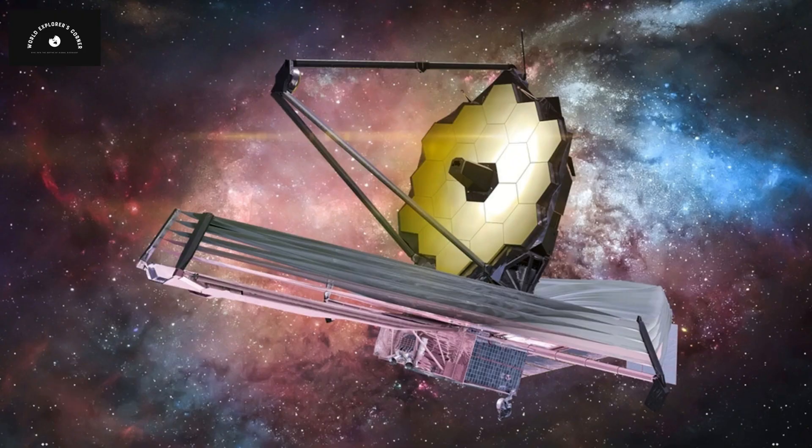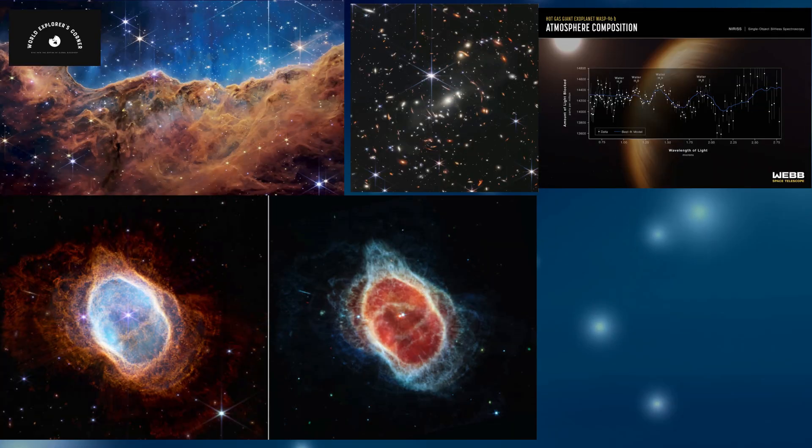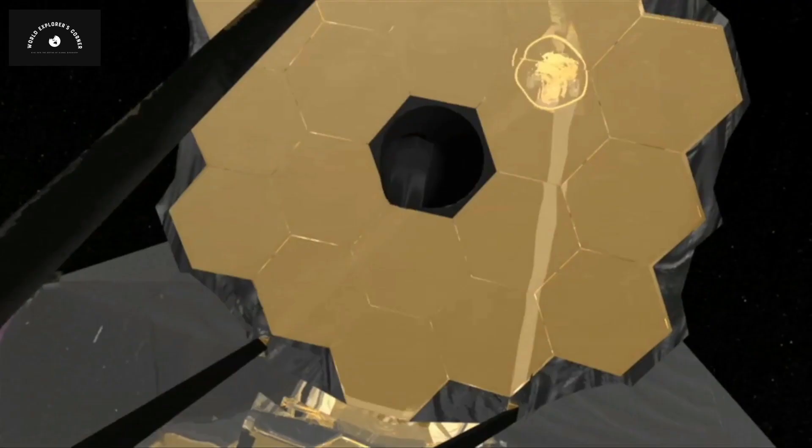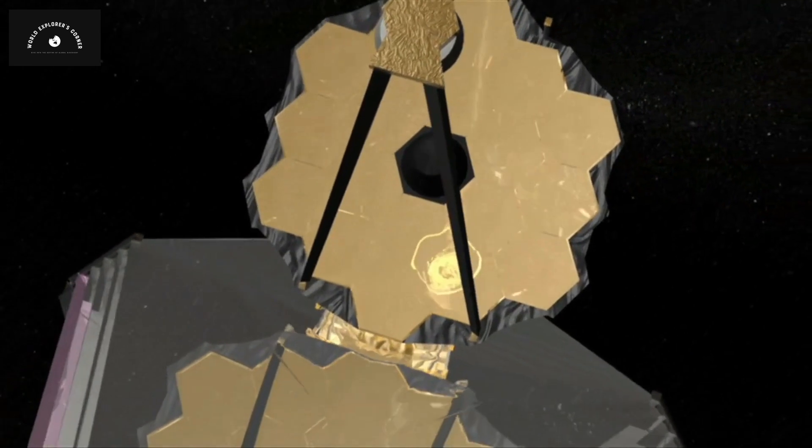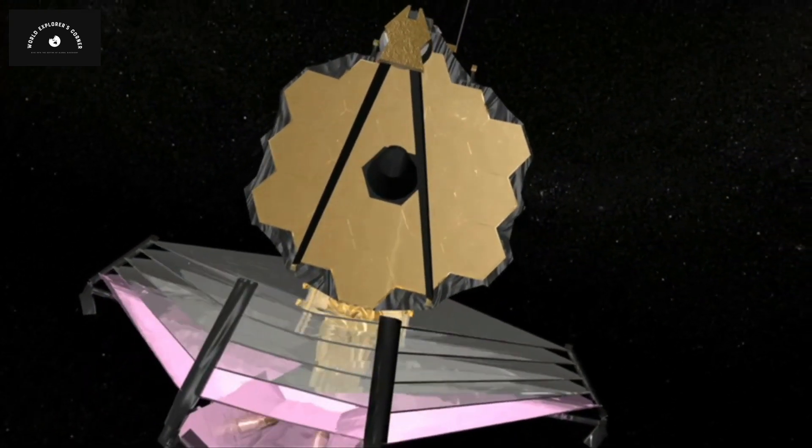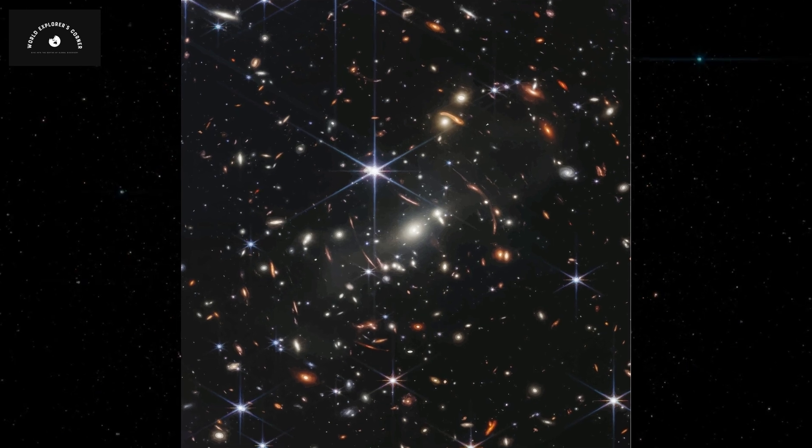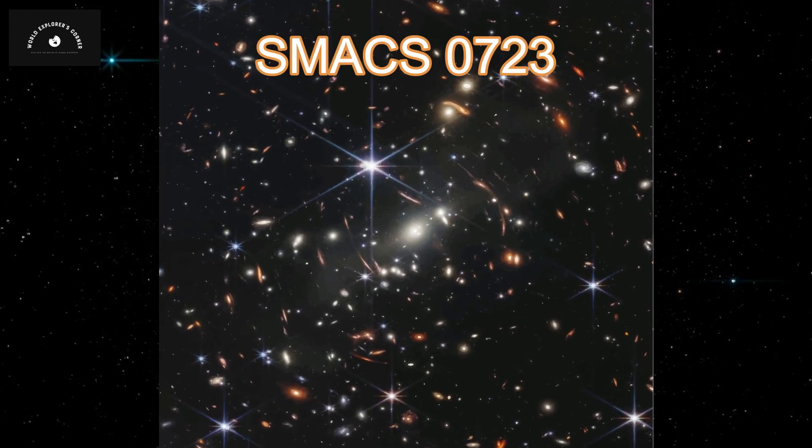On July 12th, NASA published the first five pictures taken by James Webb, astonishing the entire world. The cameras on James Webb can effectively capture the history of deep space. In the first photo released by NASA, we can see a galactic cluster known as SMACS-0723.